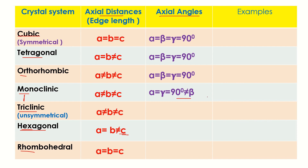For monoclinic, remember the shortcut 'MB' — as in MB data on the internet. M stands for monoclinic and B stands for beta. In monoclinic, the axial angle beta is not equal to 90°, while alpha and gamma are equal to 90°.